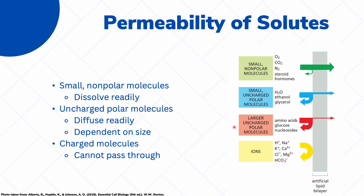However, larger molecules like amino acids, glucose, and nucleosides have a very hard time passing through our cell membrane, so they need the help of various proteins to facilitate their transfer. Finally, you have your charged molecules or ions, and these are molecules that cannot pass through the cell membrane, meaning the cell membrane is impermeable to these different ions.